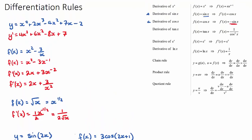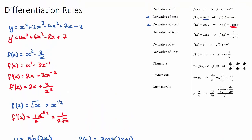The derivative of tan is not asked very frequently, but the formula states that the derivative of tan x is 1 over cos squared x. This can be derived using the quotient rule by differentiating sin x over cos x.